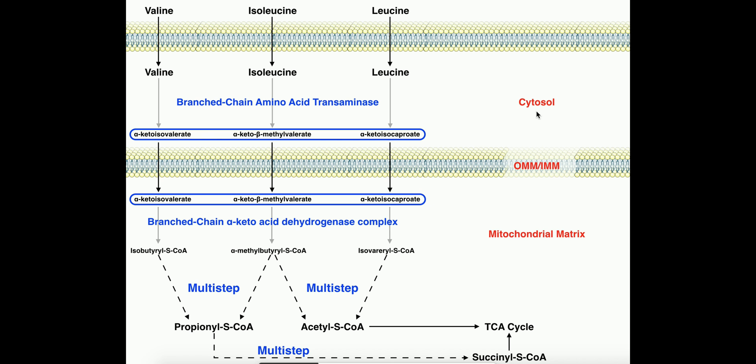In this video, we're going to discuss branched chain amino acid catabolism. So this is going to be the degradation pathways for the three BCAAs, or branched chain amino acids, which include valine, isoleucine, and leucine. And these are the three BCAAs that are going to be incorporated into proteins, at least they have that capacity.